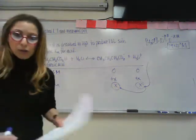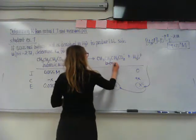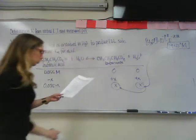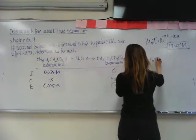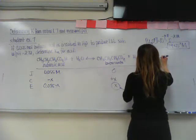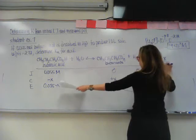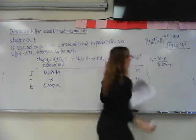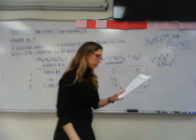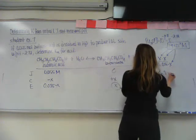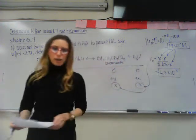So my Ka is x times x divided by 0.055 minus x. So if I substitute this value in for my x's, you're going to end up with 6.8 times 10 to the negative 5 for your Ka.